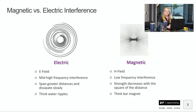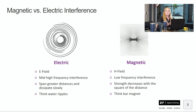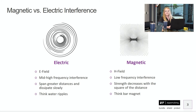When we're talking about EMI, there are two types: magnetic or H-field interference, and electric or E-field interference. Electric is going to be your mid to high frequency range, usually megahertz or gigahertz. Magnetic is going to be more low frequencies — typically hertz or low kilohertz range. For electric, I like to think of throwing a rock in a lake. It spans great distances and dissipates slowly, like ripples on water. Those ripples might get smaller but they go very far.